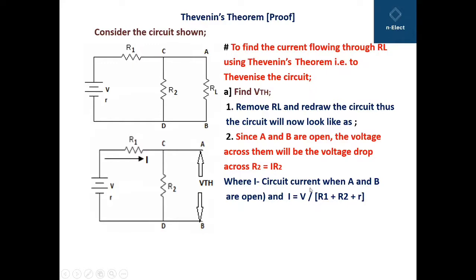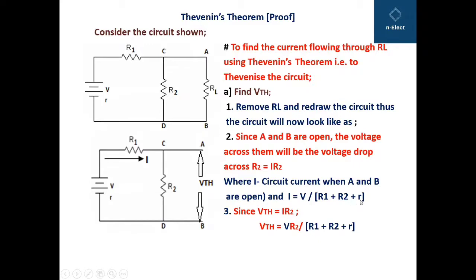Here I is the circuit current when A and B are open. I equals V divided by the total resistance in the circuit: V divided by r plus R1 plus R2. The potential drop across R2 equals IR2, therefore VTH equals I times R2, which gives VTH equals V times R2 divided by R1 plus R2 plus r.